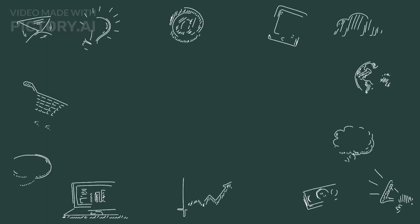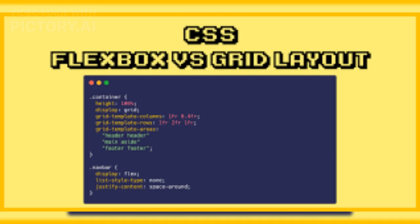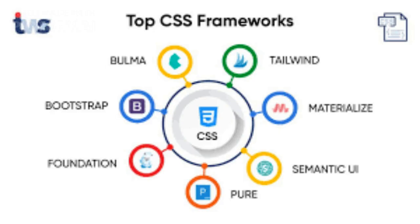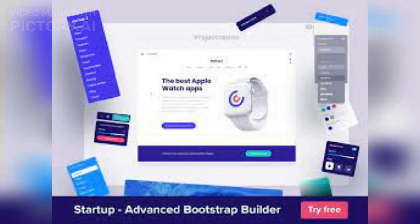The key concepts of CSS Flexbox are: First, Flex Container: a container element that holds a group of flex items. You can create a flex container by setting the display property to flex or inline-flex. Second, Flex Items: the individual elements within a flex container that are laid out according to the flexbox rules. Flex Items are direct children of the flex container.